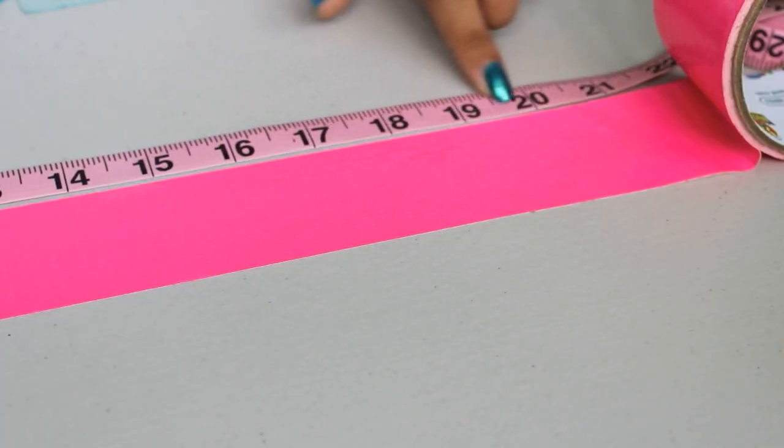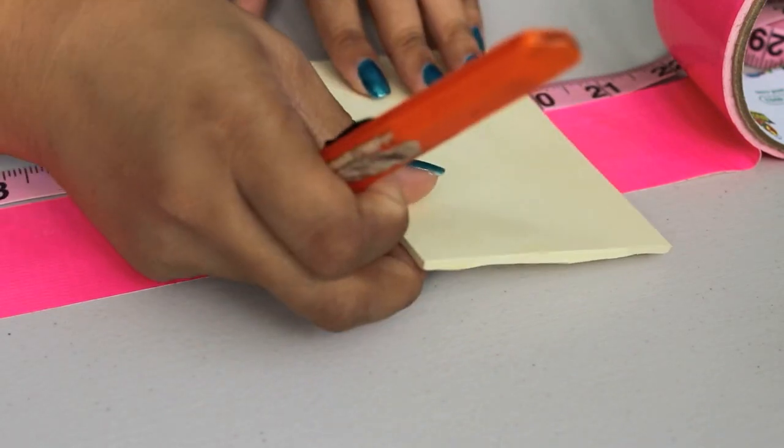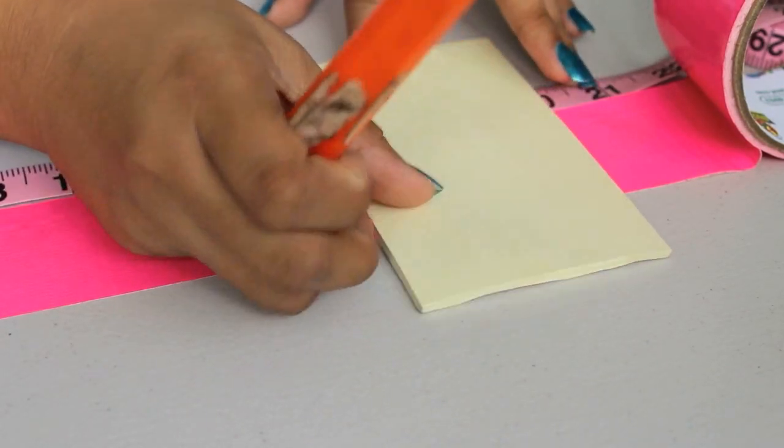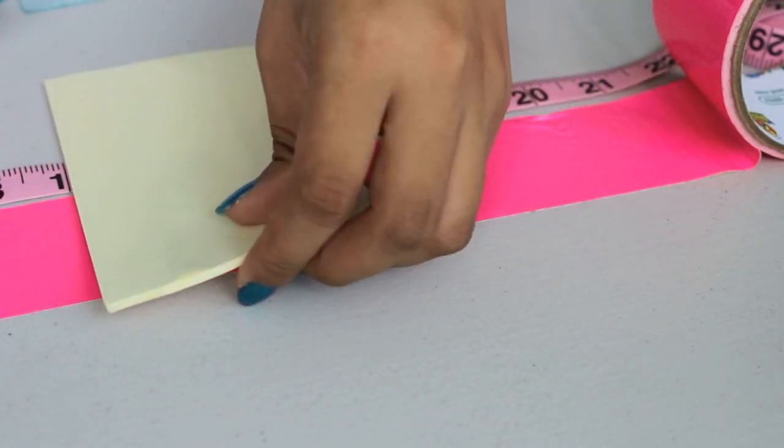Now we can start making the petals. Measure out 20 inches of duct tape, and taking your straight edge and your razor, cut every 2 inches. This should give you a perfect 2 by 2 inch square.